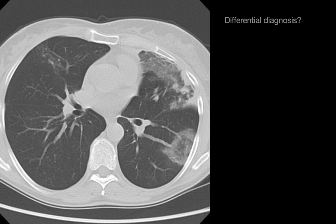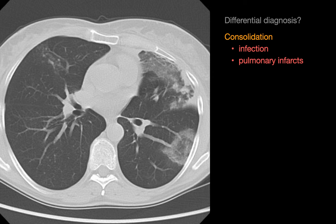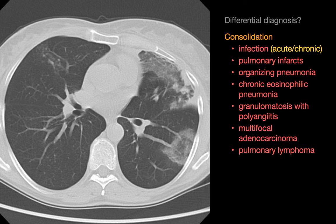The findings in this case are multiple, bilateral, predominantly peripheral regions of peribronchovascular consolidation and ground glass opacities. At least one focus in the lateral mid-left lung has a reverse halo appearance. Since anything that causes consolidation can also cause ground glass opacities, the differential diagnosis for this case will be primarily derived from our differential diagnosis for non-diffuse acute consolidation and chronic consolidation.